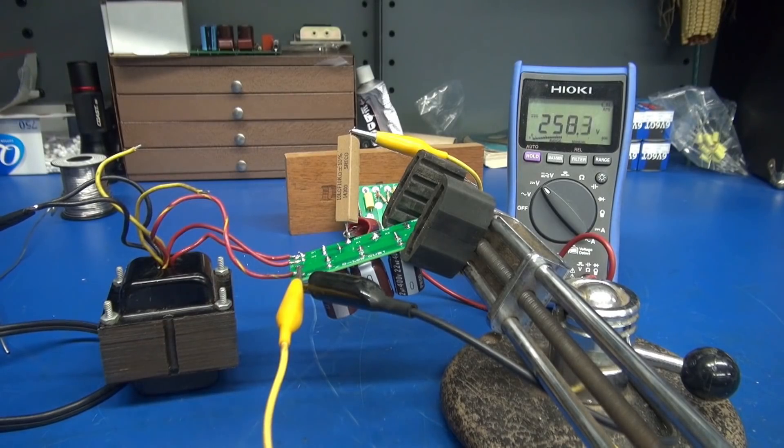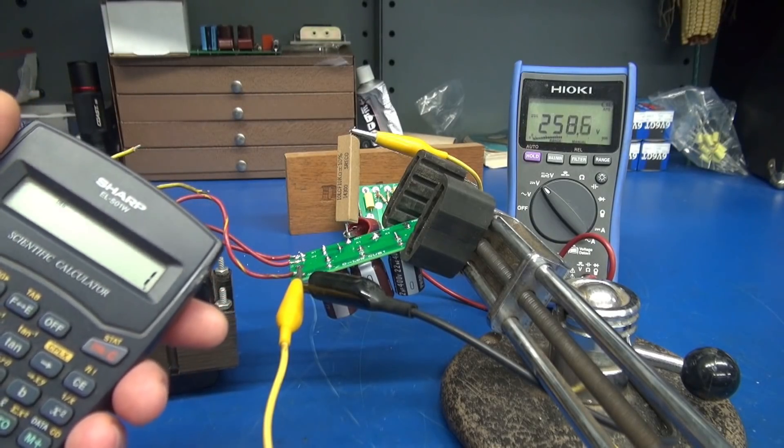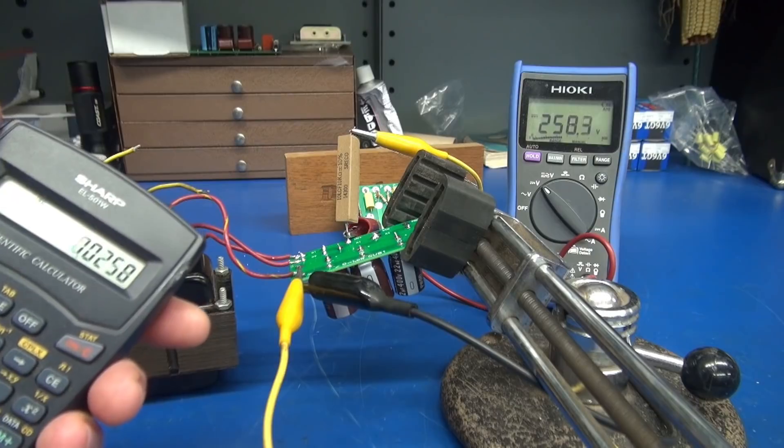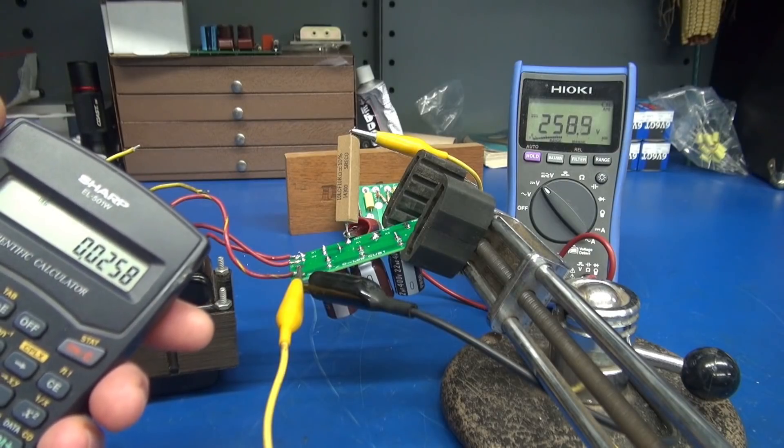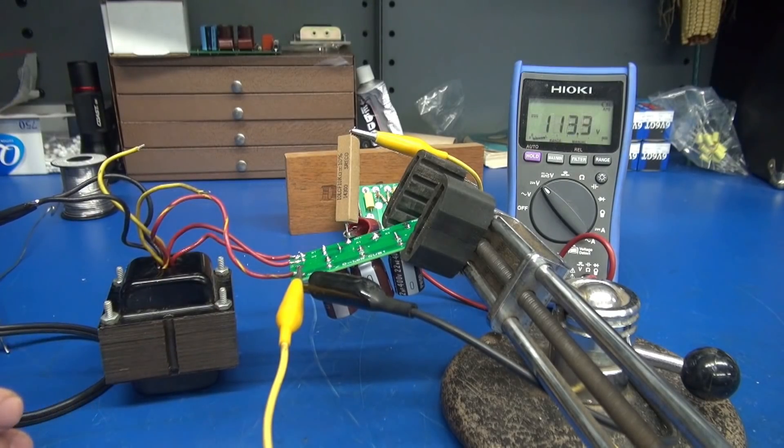So you see we have approximately 258 volts at 30 mils. It's probably not exactly 30 milliamps because it's 258 volts divided by 10,000. That's a little over 25 milliamps. So this transformer will work fine for a class A 6AQ5 amplifier build.